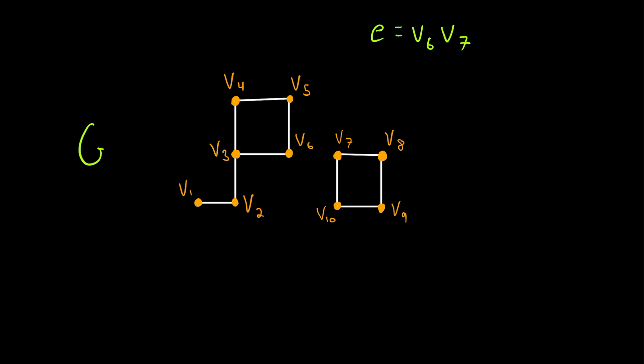Clearly, this edge is a bridge. If we delete it, we are then looking at the graph G minus E, which is disconnected. So deleting the edge E disconnected the graph. We went from having one component to now having two components.